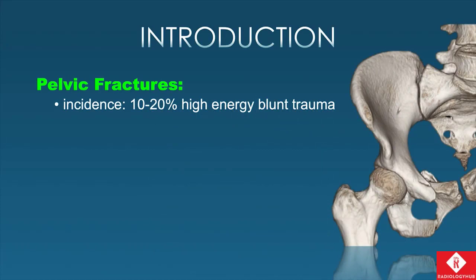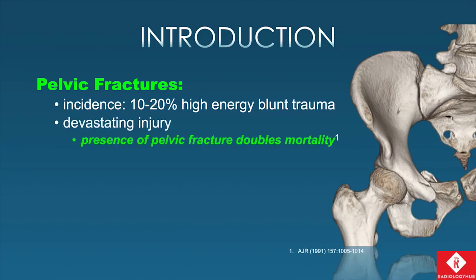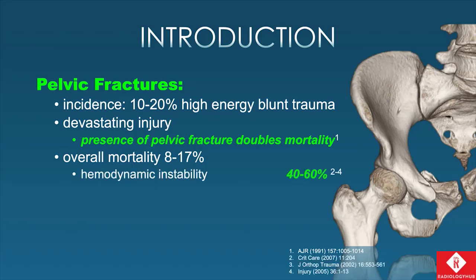Pelvic fractures are seen in about 10 to 20% of high-energy blunt trauma. It's a devastating injury. The presence of a pelvic ring fracture will double the mortality of whatever else is going on with these patients. Overall mortality can be as high as 17%. However, if the patient presents hemodynamically unstable with a pelvic fracture, that mortality moves up to between 40% and 60%.